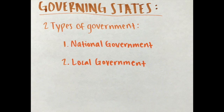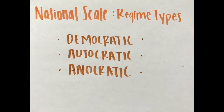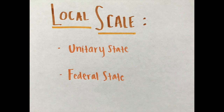A state has two types of government: a national government and a local government. At the national scale, a government can be more or less democratic; at the local scale, the national government determines how much power to allocate to local governments. National governments can be classified as democratic, autocratic, or anocratic. A democracy is a country in which citizens elect leaders and can run for office. An autocracy is run according to the interests of the ruler rather than the people. An anocracy is not fully democratic or fully autocratic, but displays a mix of the two. Governments are organized according to either a unitary state, which places most power in the hands of central government officials, or a federal state, which allocates strong power to units of local government.